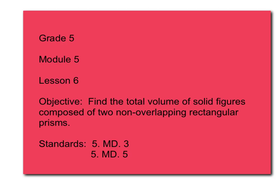This is grade 5, module 5, lesson 6, and the objective is to find the total volume of solid figures composed of two non-overlapping rectangular prisms. This lesson covers standards 5MD3 and 5MD5.